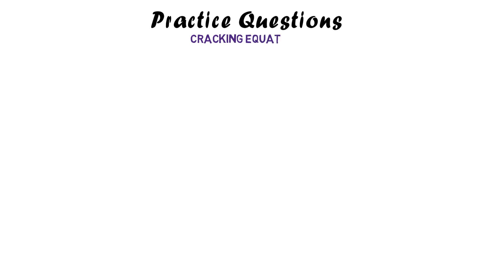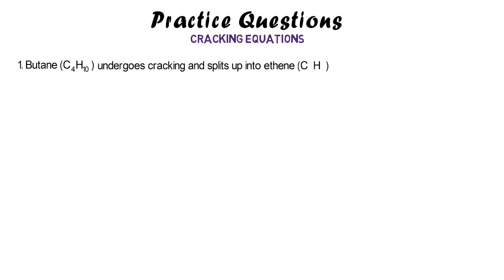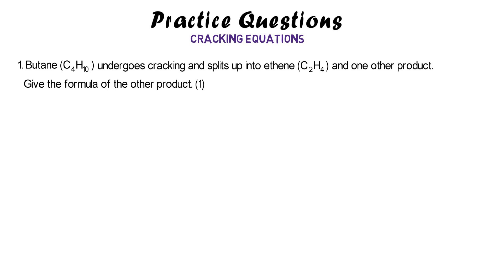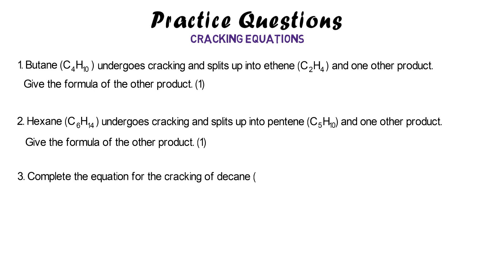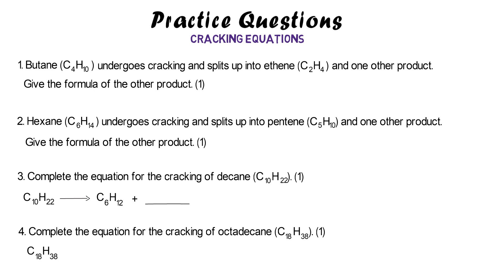Here are some practice questions. The first two ask you to identify the formula of a missing product: butane produces ethene and one other product — give the formula; hexane undergoes cracking and splits into pentene and one other product — give the formula. The next two ask you to complete equations: the cracking of decane and the cracking of octadecane — identify the formula of the missing product in each case. Pause and have a go.